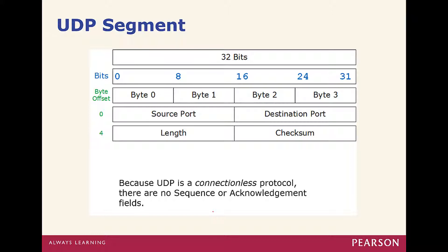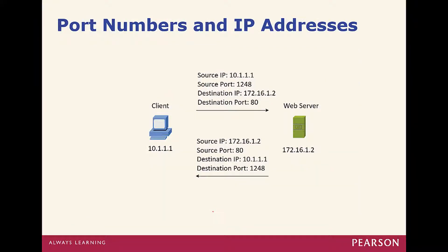A port is essentially a hole, or a predefined setting. For example, HTTP web traffic moves on port 80. If we want to block all web traffic, we simply block port 80, which stops the flow of web traffic over that port.